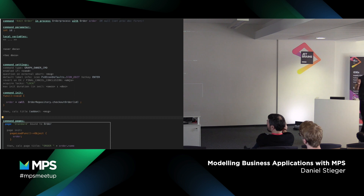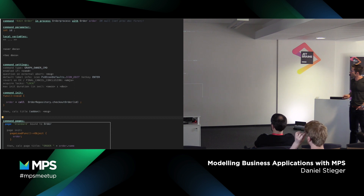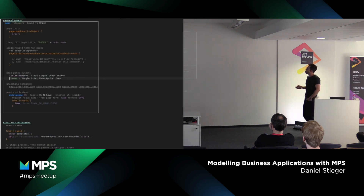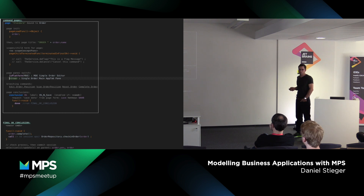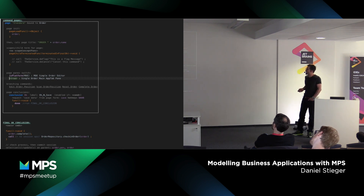Looking at that artifact in MPS, there is a command 'edit order' and a command parameter — the ID is passed from outside this context. There are some command settings, the command init block, and each command can have multiple pages, letting you model a wizard-like setup, but here we just use one page and that page sends the order graph to the user interface. The user interfaces mentioned are two — one for a mobile platform and the one we've already discussed. The OK conclusion with the label 'save and close' and done executing leads to the final OK block, which just checks in the order again.